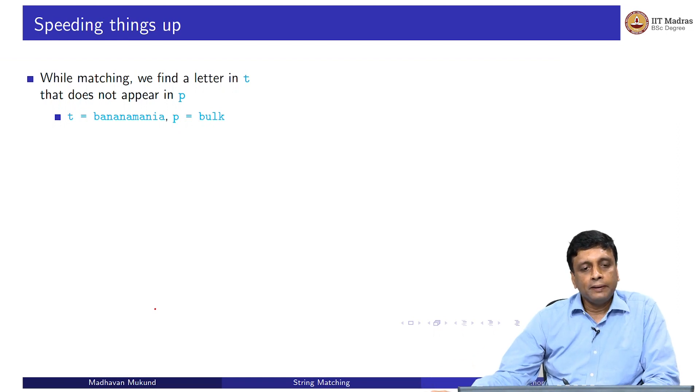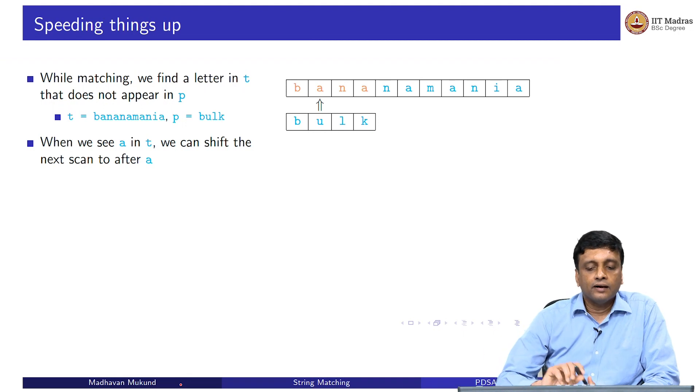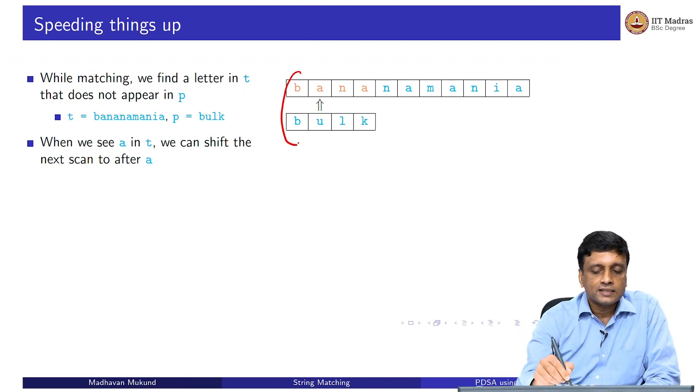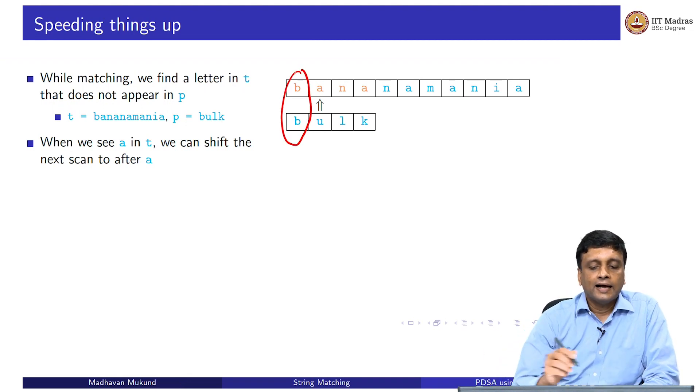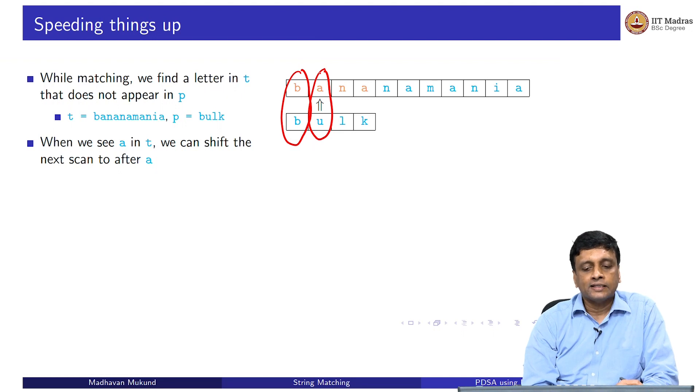It turns out we can speed things up. Supposing that while we are matching, we find a letter in the text, which does not match any letter in the pattern. For instance, supposing our text is this word banana mania, and the pattern is bulk. If I scan from left to right, then at this point, my first slice for instance, B matches, and then the first mismatch I find is at the second position. At this position, I find the letter A in my text, and the letter U in my pattern.